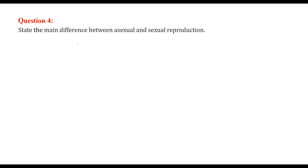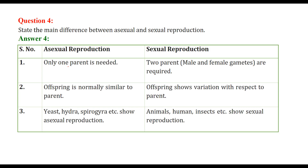The main differences between asexual and sexual reproduction: in asexual reproduction only one parent is needed, while in sexual reproduction two parents — both male and female — are required. Offspring in asexual reproduction are exactly similar to the parent, but in sexual reproduction offspring may show variation. Examples of asexual reproduction: yeast, hydra, spirogyra. Examples of sexual reproduction: animals, humans, and insects.